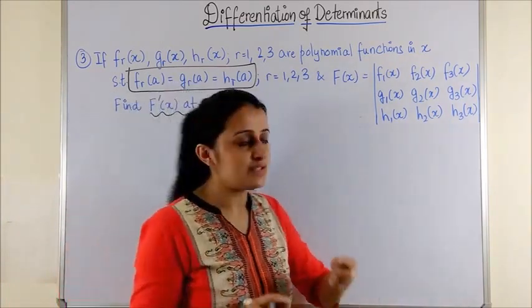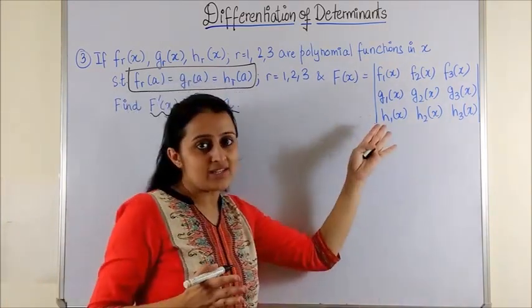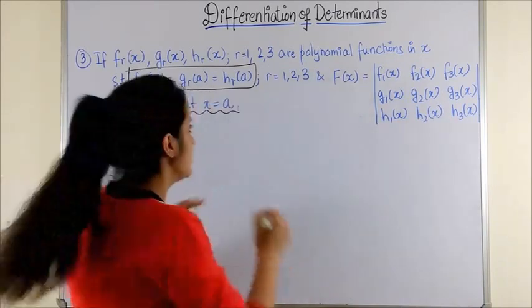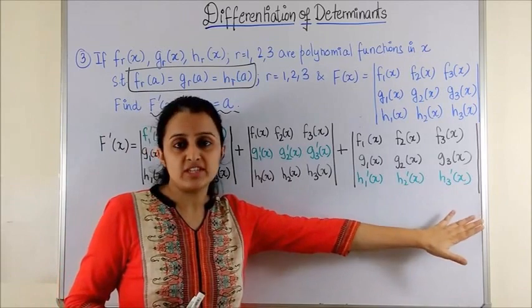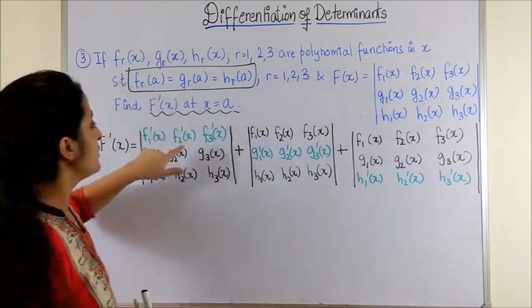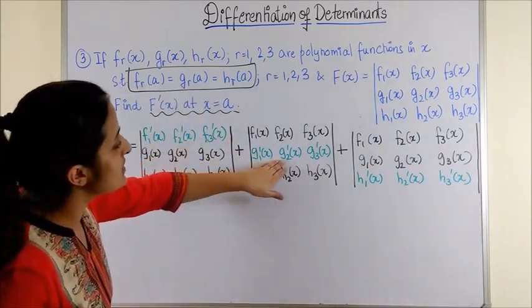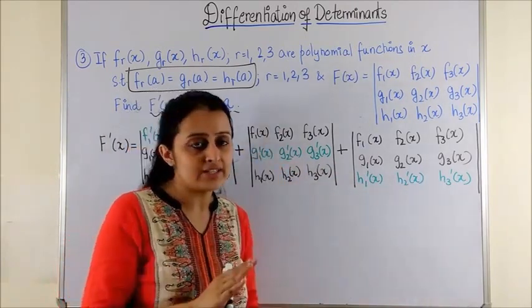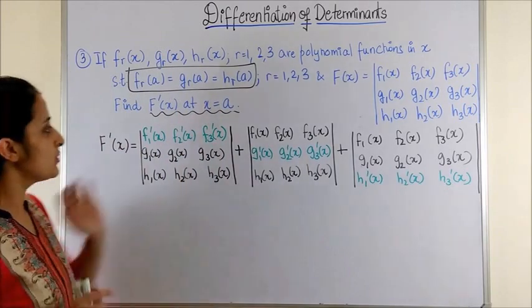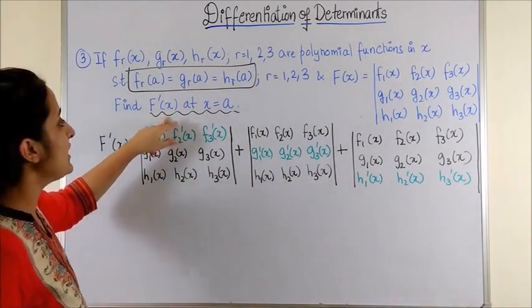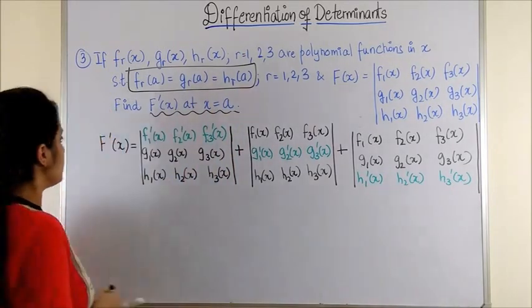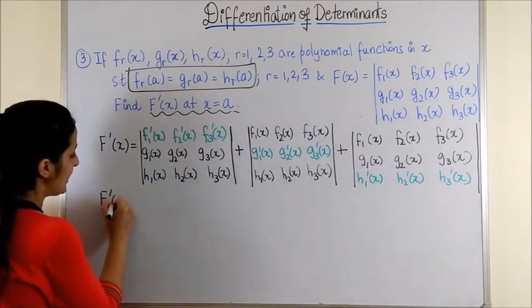So let's go step-wise. Once again, suppose once again we choose to differentiate this f(x) row-wise. So following our regular procedure for f'(x), you differentiate the first row, second row, and third row in each of the determinants, retaining the other ones as they were. So here this is what you get. Now we have to find f'(x) at x = a, which means f'(a).